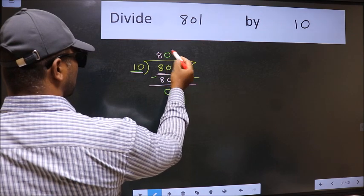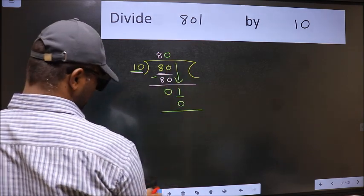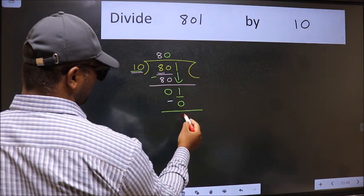So 10 into 0 is 0. Now we should subtract, we get 1.